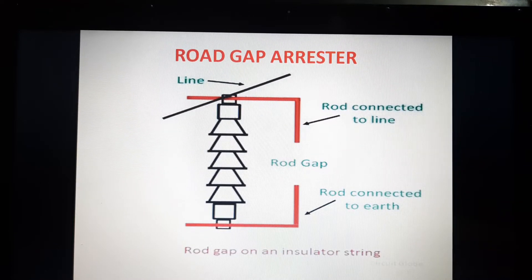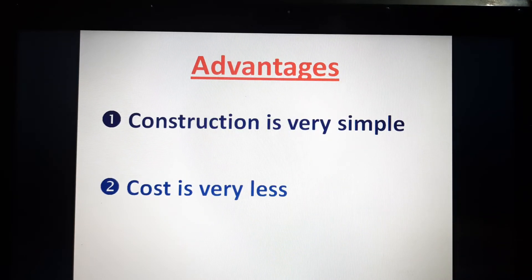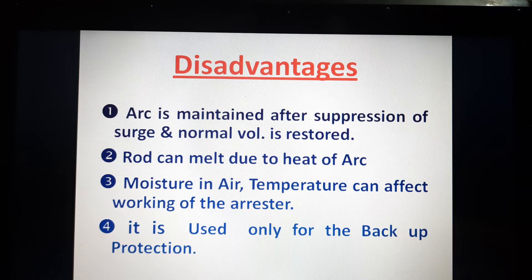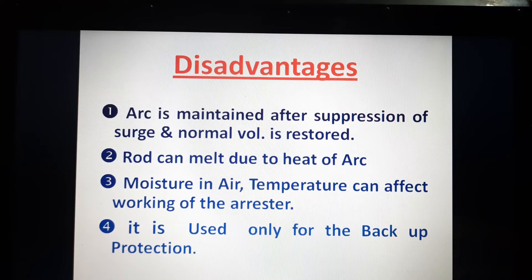The construction of the rod gap arrestor is very simple and its cost is very low compared to other lightning arrestors. However, there are a few disadvantages. First, the arc is maintained after suppression of the surge even when normal voltage is restored. Second, the rod can melt due to the heat of the arc, as the high temperature caused by the arc can melt the rod.